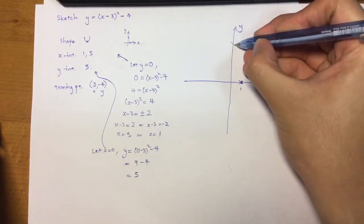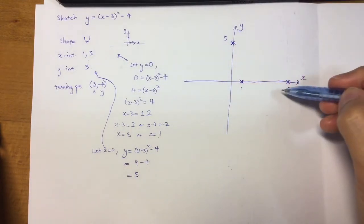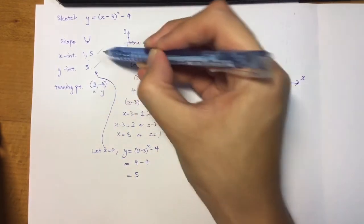So maybe y-intercept a value of 5 here. Okay, so I have my two x-intercepts and my y-intercept. So put in, put in.